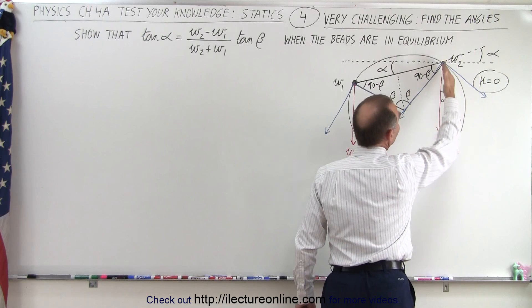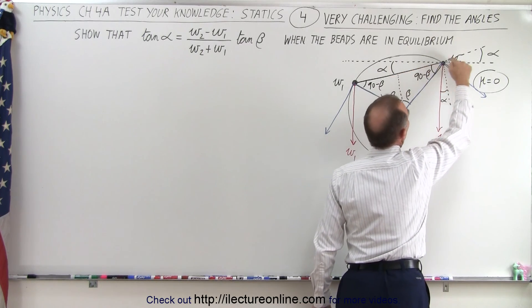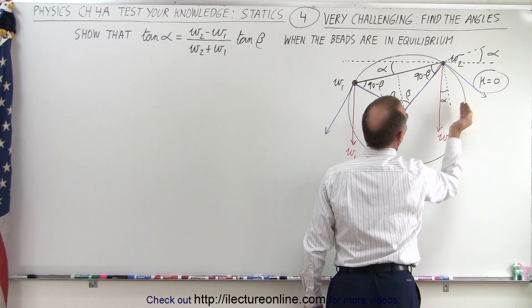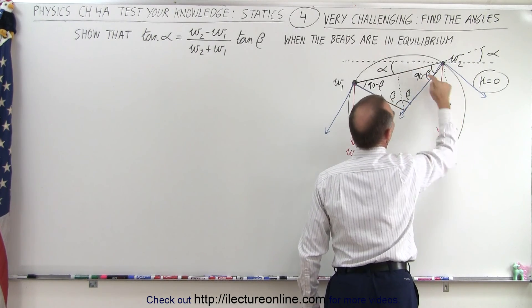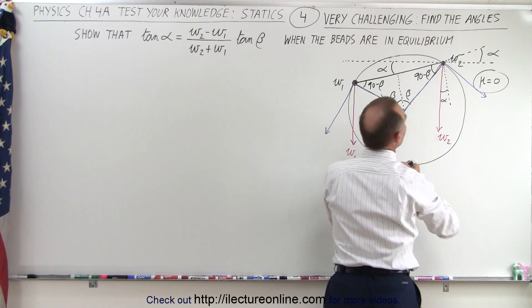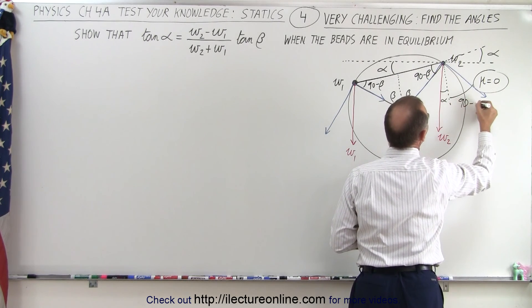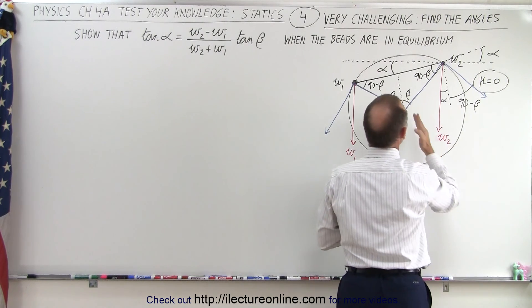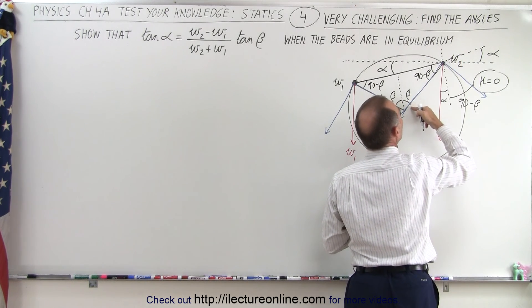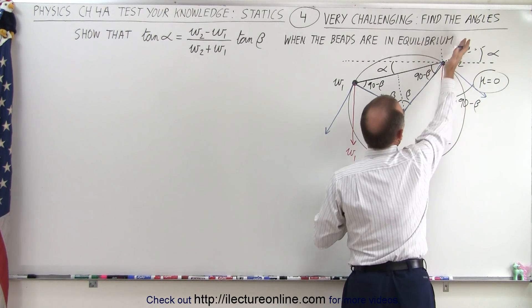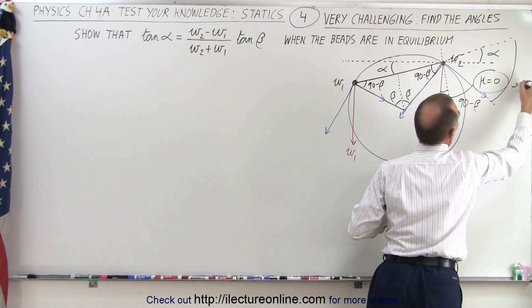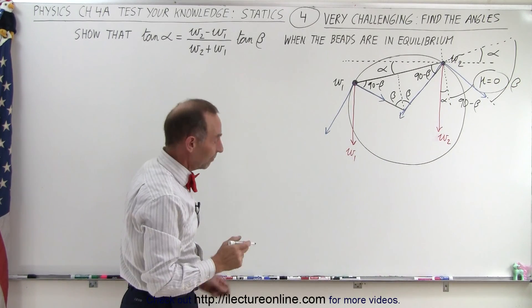Next we need to look at this line — it is perpendicular to the string connecting the beads. And this line here is perpendicular to this line. So the angle between these two lines must be equal to the angle between those two lines. This is perpendicular to the line connecting the two beads, and this is perpendicular to this line, which means that 90 minus beta is this angle right here. And if I continue this line, that angle here must also be equal to beta. So now we have enough defined on that side.